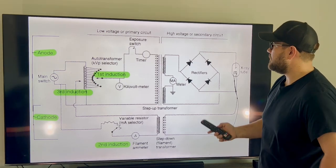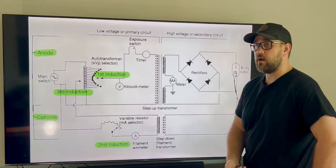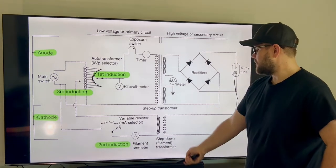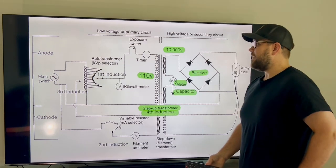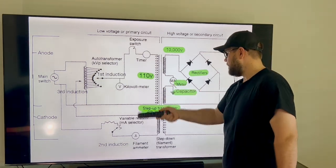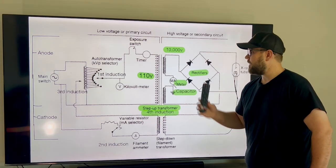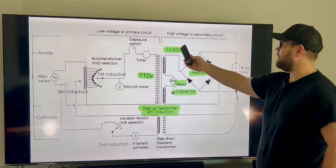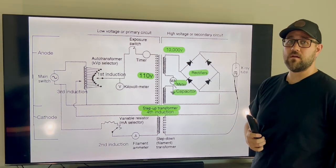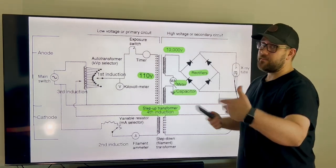So now that we've talked about our primary circuit and our low voltage, let's switch over to our next part, because that's going to be our fourth induction and getting things onto our high voltage. So the power from the wall is coming at 110 volts. That's where our fourth induction is going to happen here, up at our step-up transformer. It's going to take that 110 volts and step it up to 10,000 volts.